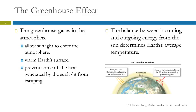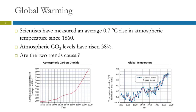If you mess the balance up, you're going to change the average temperature of the Earth, and that can have catastrophic consequences. Currently we're concerned about the Earth getting warmer, but the Earth getting colder is a problem too, because that can send you into an ice age, which would also be devastating. Scientists have measured average temperatures since 1860 and noted an average 0.7 degrees Celsius rise. They've also noted that atmospheric carbon dioxide levels have risen by 38%.